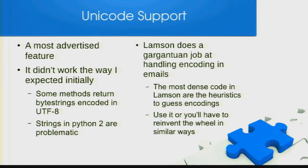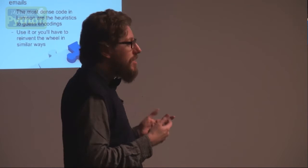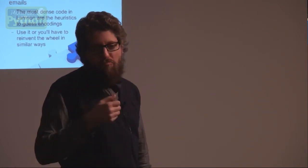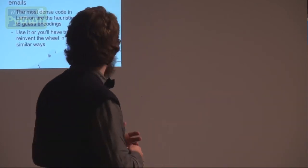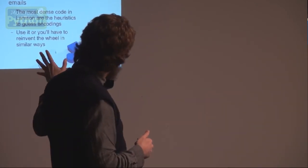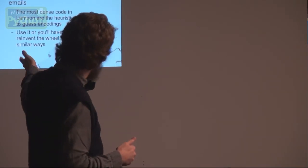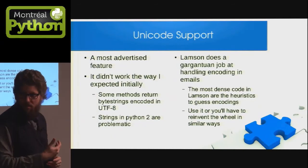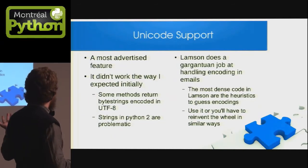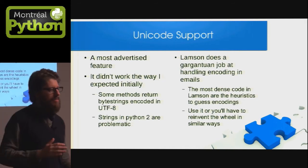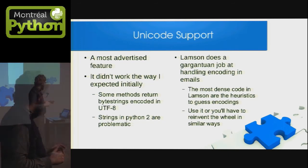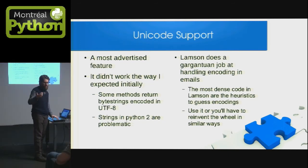Si tu as envie de faire quelque chose avec des courriels et tu n'as pas envie d'utiliser l'hameçon, les codes pour faire le processus d'Unicode, c'est bien sûr les choses les plus intéressantes des volets du projet — et aussi les codes les plus compliqués dans toute la base de code. Pourquoi ? Parce qu'il y a beaucoup de clients de courriels qui écrivent des courriels mauvais, non-conformants. Il y a besoin d'utiliser différentes heuristiques pour tenter d'adviner l'encodage. Malheureusement, je n'ai pas compris initialement comment il fonctionne parce qu'il semble qu'il retourne des byte strings encodés en UTF-8. Je viens de Java — les chaînes des caractères de Python sont un peu compliquées. C'est la raison que Python 3000 s'est amélioré beaucoup.